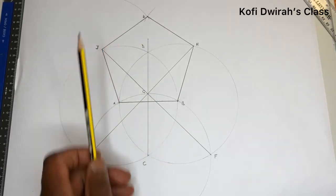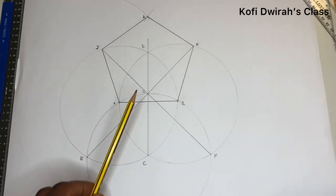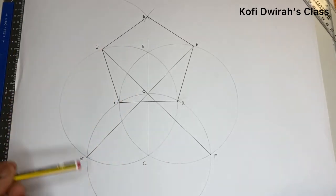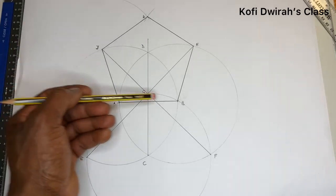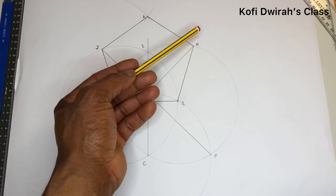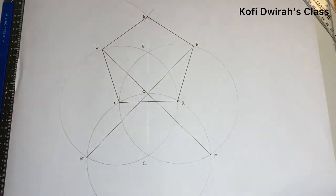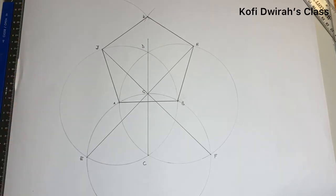That gives you the remaining two sides of the pentagon. Now we have all five sides: AB, BH, HK, JK, and AJ. So this is how to construct a pentagon giving one side.